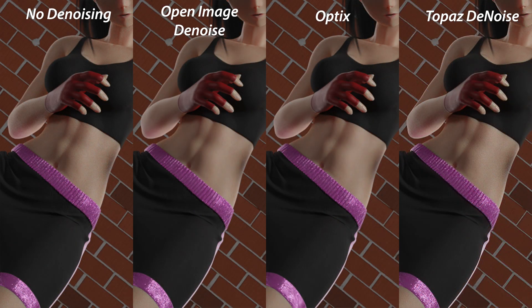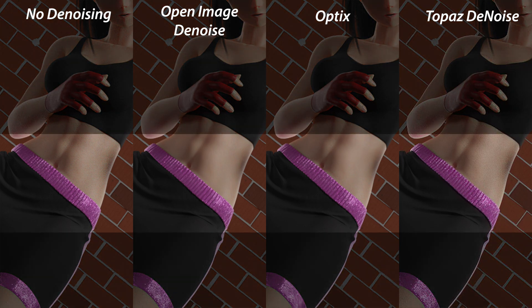If we crank up the samples to 1000 at 1080p, things definitely change. OID still looks really good but Optics has improved significantly with more samples as the compression is mostly gone now. Even with the extra samples, Topaz still can't defeat the skin noise though. Moving our focus to the waistband on the shorts, we can see there is finer specular highlight retained from the original image in Optics, where it's a little blurrier in OID. Topaz does a great job here as well.